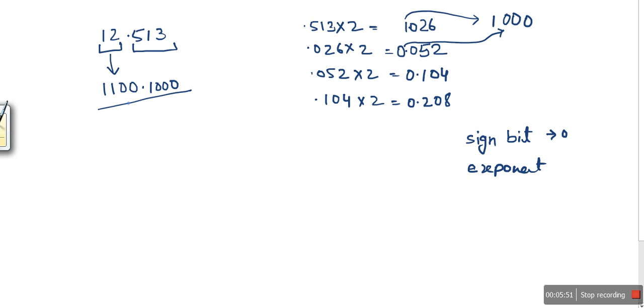In order to find the exponent, first we need to convert this number into binary, which we have already done. Next thing, we need to normalize this number.